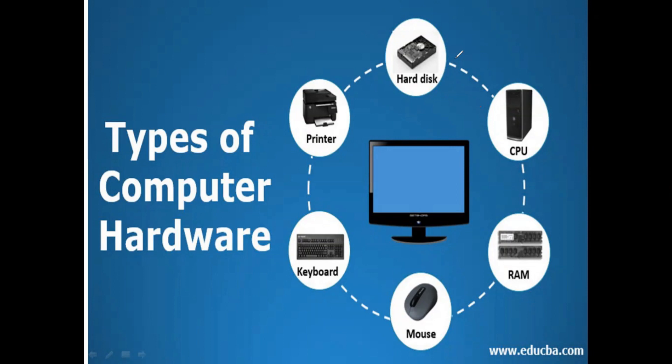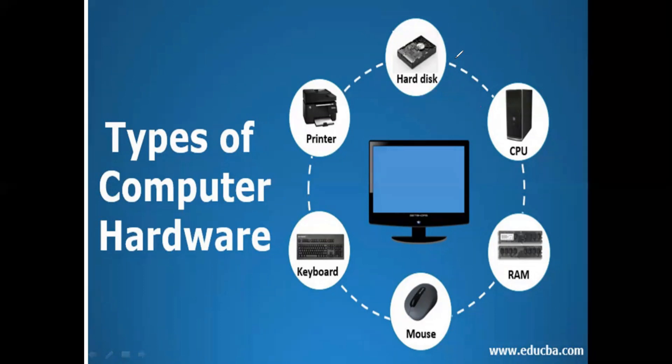Through a computer, we can publish books, advertising, products, and services — everything we can do through the computer system. So this is the advantage of computers. Now, a computer system consists of: hardware, software, users, and data.